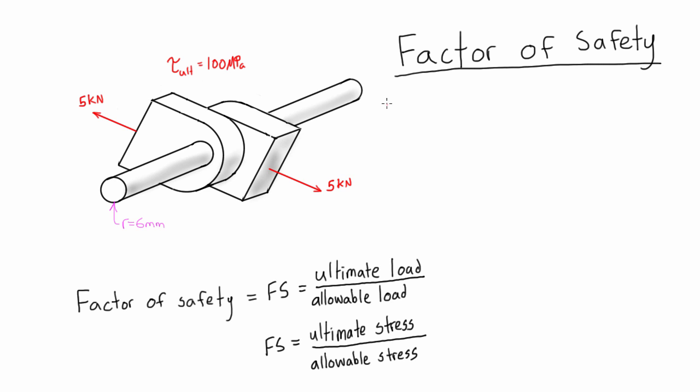So we want to figure out what is the factor of safety for this situation. Well, we need to find the shearing stress that is being caused by this applied load. Because this is our allowable load, then the corresponding shear is the allowable stress. So we have the formula for this is just the applied load or the allowable load over the cross-sectional area of the rod. So first of all, let's figure out what the cross-sectional area is.